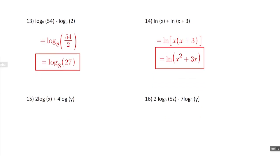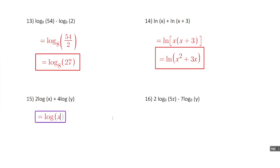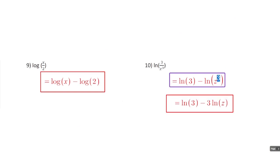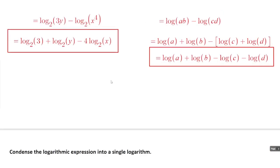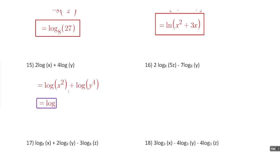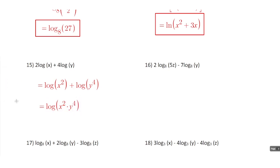Number 15 is similar to number 14, except we have coefficients here, and we can't combine the logarithms unless the coefficients are both 1. So we use the power property first to rewrite this as log of x squared and log of y to the fourth. Then we use the product property to combine them, giving us log of x squared times y to the fourth.